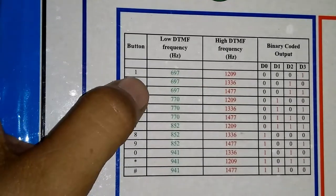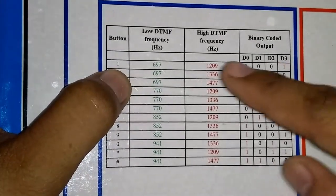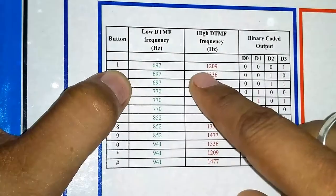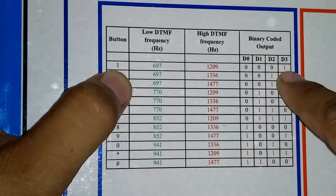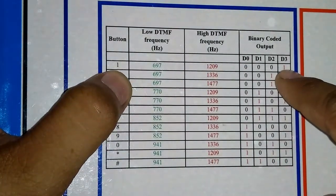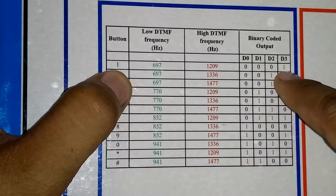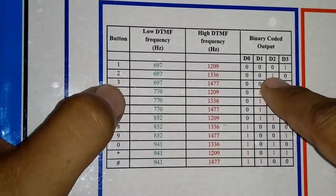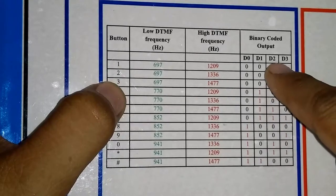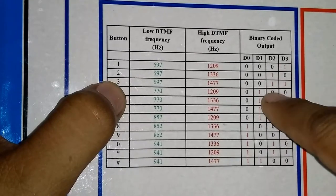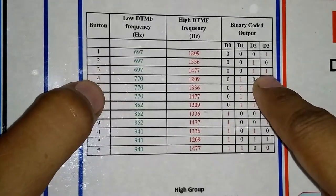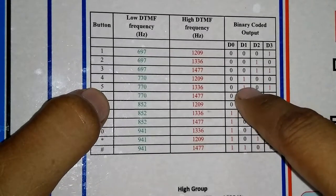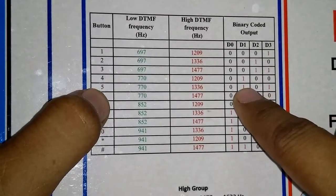When I press a button, the low frequency and high frequency combine. The frequency match determines which output line turns on. The decoder IC has outputs D0, D1, D2, and D3. For example, pressing 2 turns D2 on. Pressing a certain button turns D1 on — this is L5.